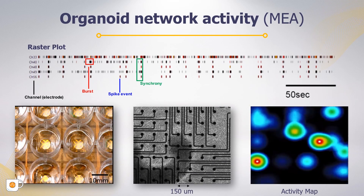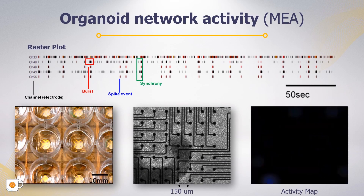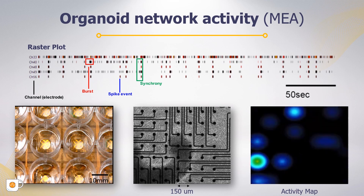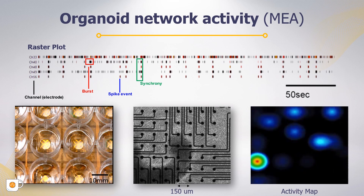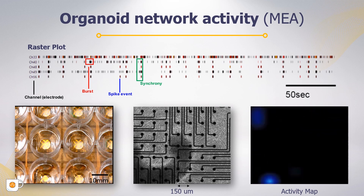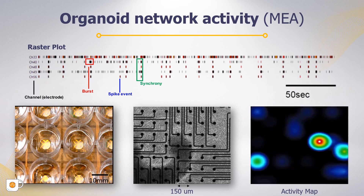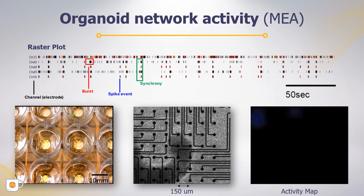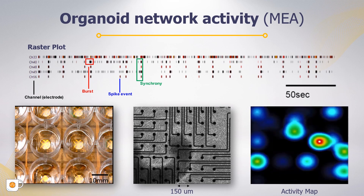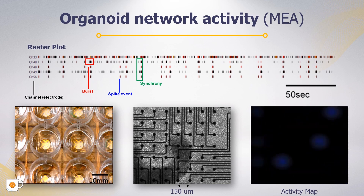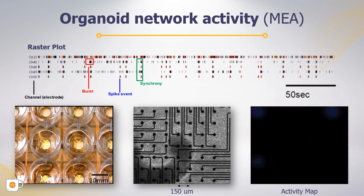To further evaluate the cortical organoid functionality at a mesoscopic level, we performed weekly extracellular recordings of spontaneous electrical activity using multi-electrode arrays, or MEA, over the course of 10 months. Cortical organoids were plated in wells of these MEA plates, each well containing 64 low-impedance platinum microelectrodes, yielding a total of 512 channels. We virtually generated activity maps as well as raster plots every week, so we could analyze how the electrical activity would evolve over time.